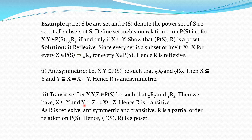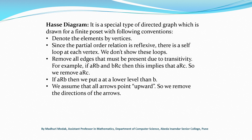R is reflexive, antisymmetric and transitive, so R is a partial order relation on P(S). Hence P(S) with R is a poset. Now, the Hasse diagram is a special type of directed graph which is drawn for a finite poset with certain conventions.